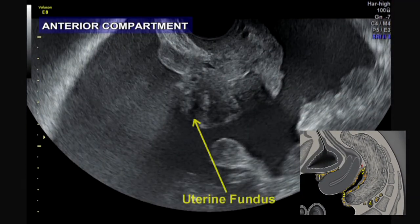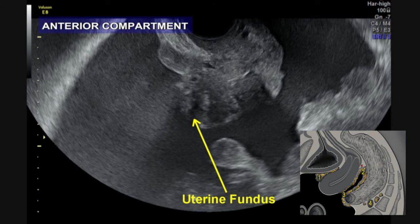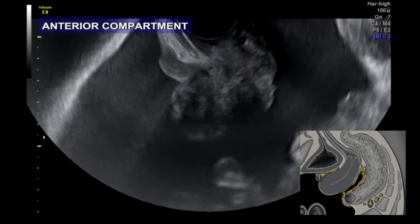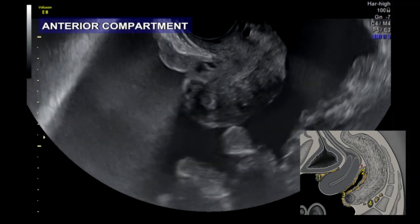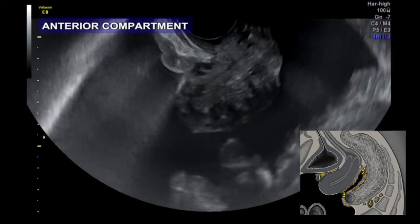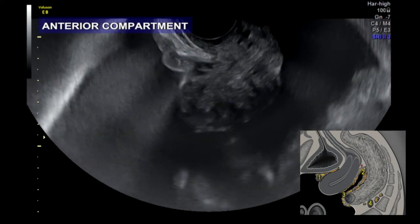You can see the uterus. First we will take a look at the anterior compartment where the carcinomatosis is located in the vesico-uterine pouch. In this patient the carcinomatosis is characterized as a diffuse, thick, hypoechogenic layer, not infiltrating the bladder.